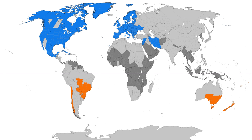In effect, DST causes a lost hour of sleep in the spring and an extra hour of sleep in the fall. George Hudson proposed the idea of Daylight Saving in 1895. The German Empire and Austria-Hungary organized the first nationwide implementation, starting on April 30, 1916. Many countries have used it at various times since then, particularly since the energy crisis of the 1970s.